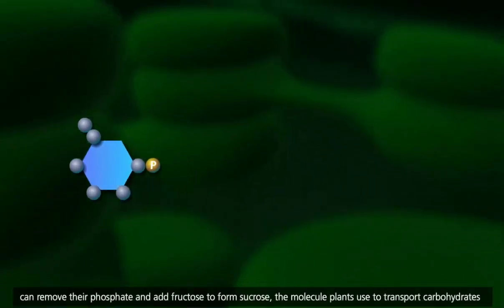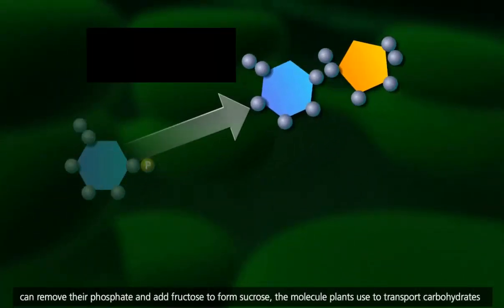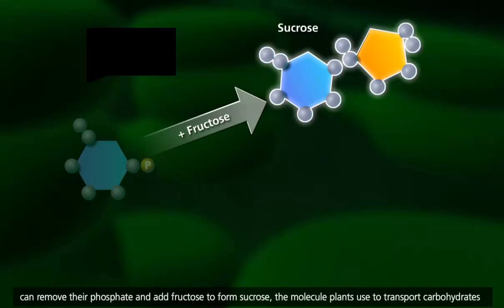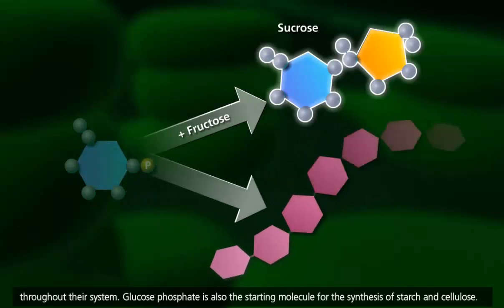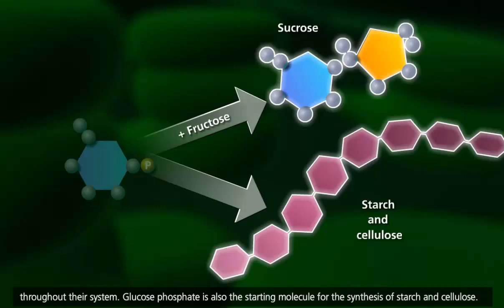These molecules can remove their phosphate and add fructose to form sucrose, the molecule plants use to transport carbohydrates throughout their system. Glucose phosphate is also the starting molecule for the synthesis of starch and cellulose.